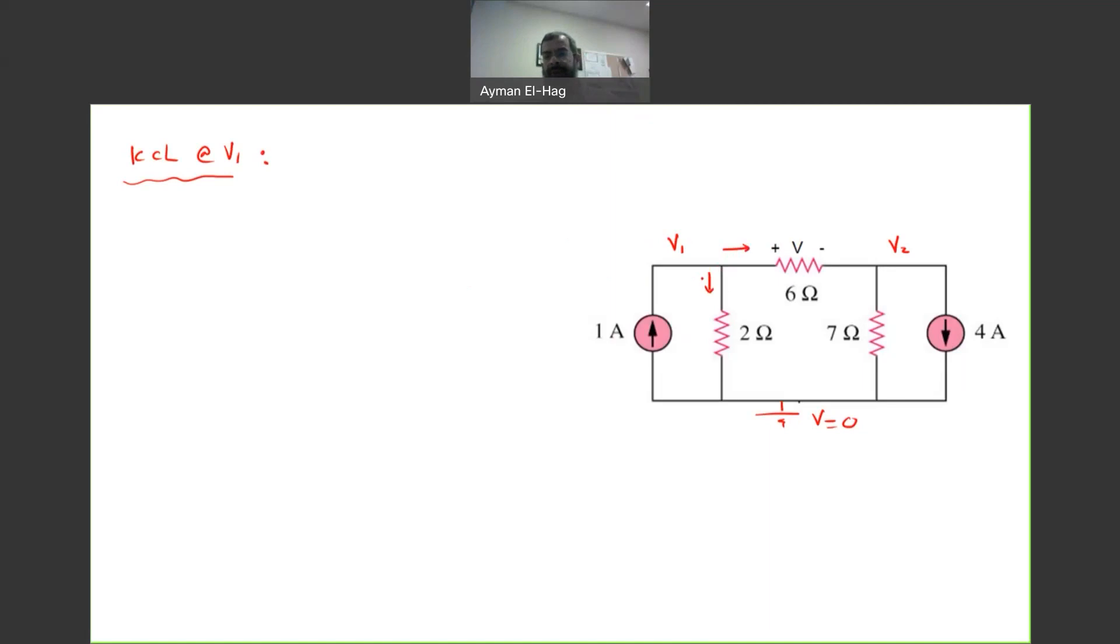So, we have one, two, three branches. We have to have three terms in the equation. This is enter the node. So, this is one, equal to these two current leaves the node.